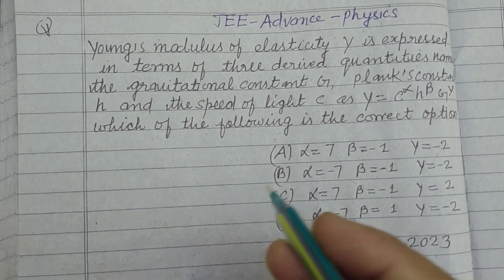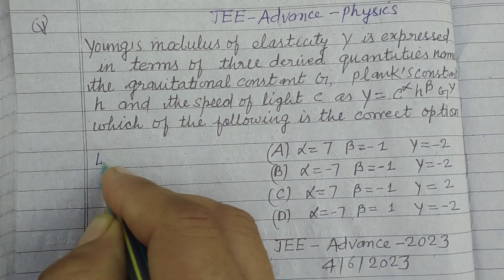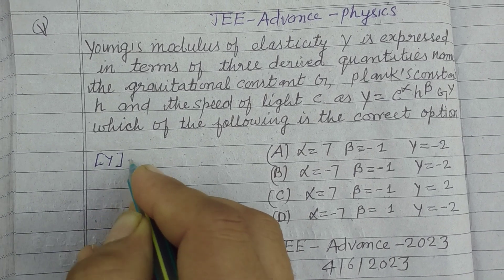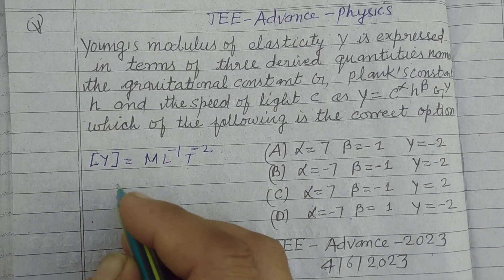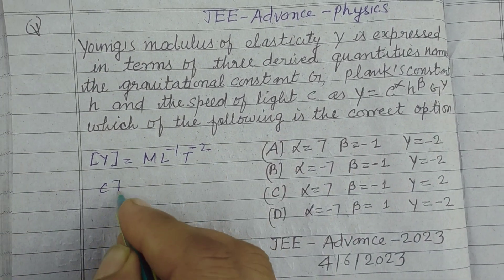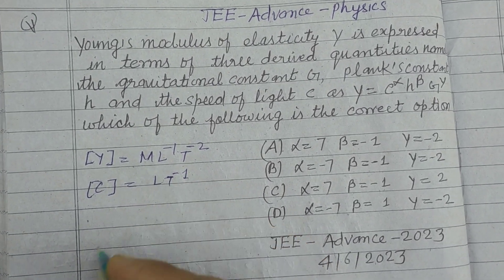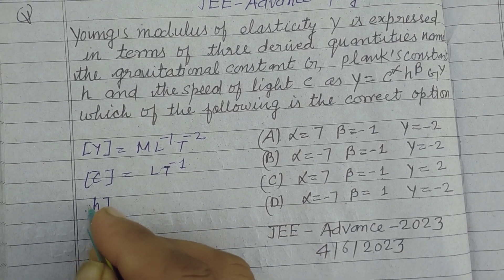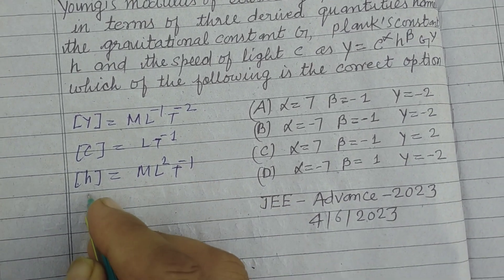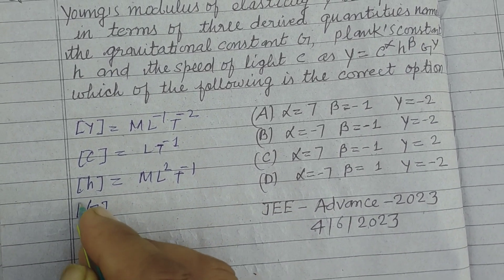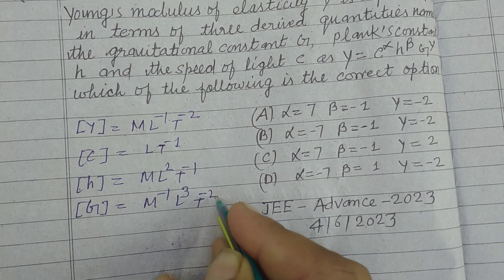Before solving this question by dimensional analysis, we write the dimensions of the given constants. The dimension of Young's modulus Y is ML⁻¹T⁻². The dimension of speed of light C is LT⁻¹. The dimension of Planck constant H is ML²T⁻¹. The dimension of gravitational constant G is M⁻¹L³T⁻².